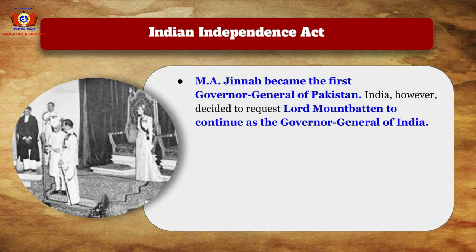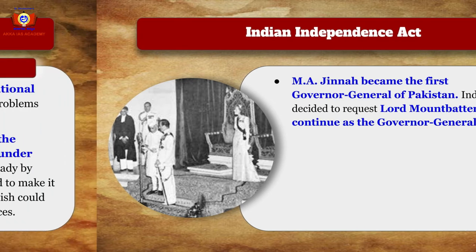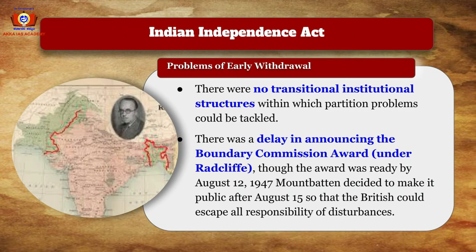Mr. Jinnah became the first Governor-General of Pakistan, while India requested Lord Mountbatten to continue as its Governor-General. There were several problems with the early withdrawal, as there was no transitional institutional structure to tackle the partition problem. There was also a delay in announcing the Boundary Commission award under Radcliffe; though the award was ready by August 12, 1947, Mountbatten decided to make it public after August 15 so that the British could escape responsibility for the disturbances.